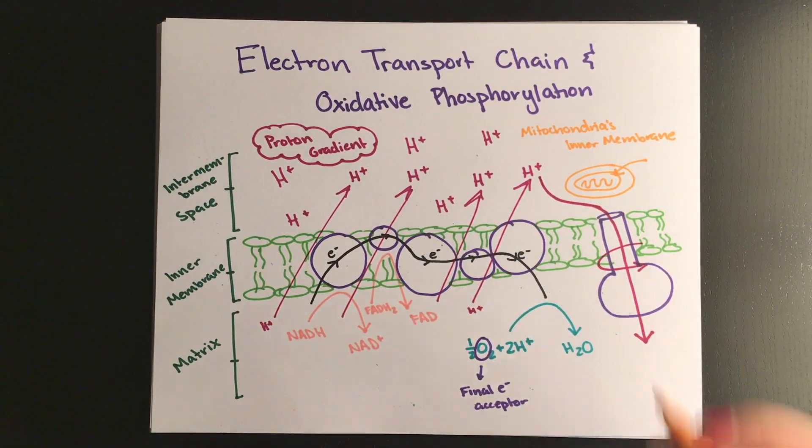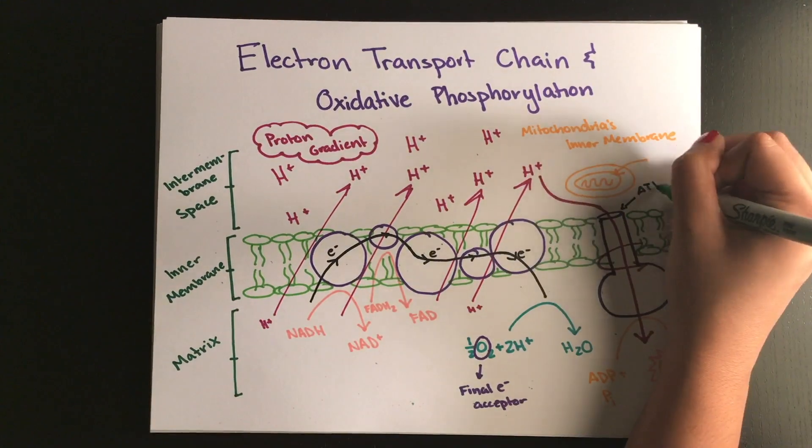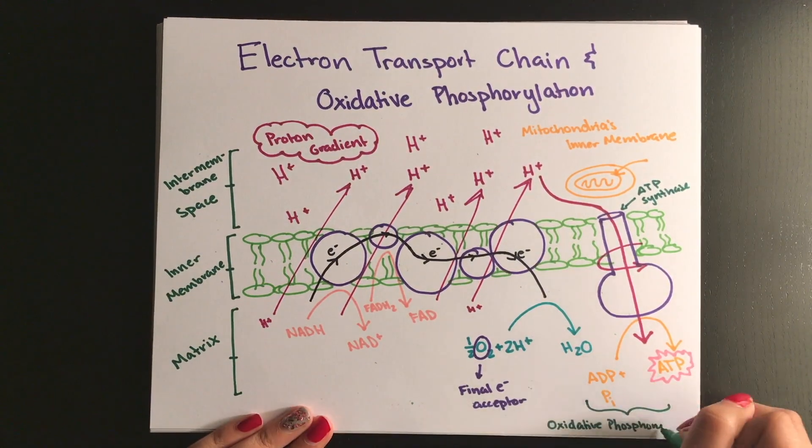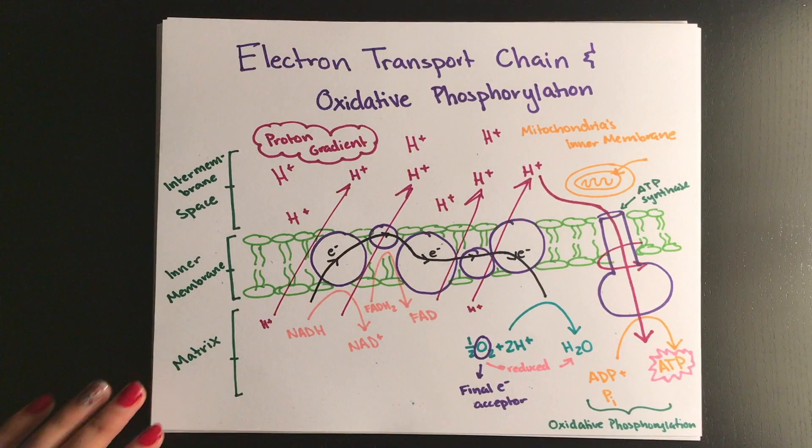Then, the ATP synthase allows the hydrogen ions to passively diffuse back into the matrix and this enzyme uses the energy created by the protons to phosphorylate an ADP to an ATP molecule. Now, the old electron carriers are free to accept more electrons from glycolysis, PDC, and the Krebs cycle, and ATP has been created.